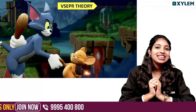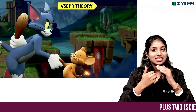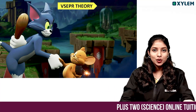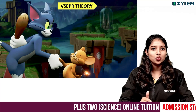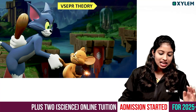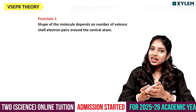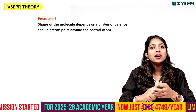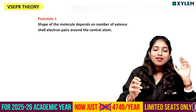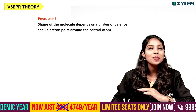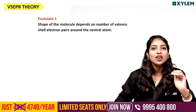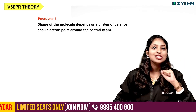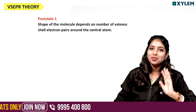Hello everyone. I am going to talk about the VSEPR theory. If you have asked previous questions about the VSEPR theory, it is important. What is the VSEPR theory? What is the valence shell electron pair repulsion theory? The valence shell electron pairs repel molecules into the shape of the geometry. This is the VSEPR theory.